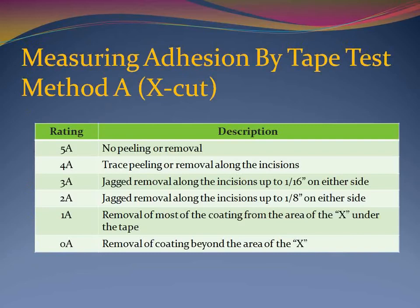Examine the X cut for coating delamination. Since there will be shavings of coating down in the grooves of the cuts, it is not a good idea to rate the adhesion based on what appears on the tape, since the tape will almost always have coating debris on it. Instead, look at the X cut on the coated surface and rate the condition according to the rating scale in the ASTM standard. A rating of 5A indicates excellent adhesion, while a rating of 0A indicates very poor adhesion. If possible, the location of break should also be recorded as adhesive — a split between two layers or between the substrate and the first layer — or cohesive, which is a split within a single layer of coating.